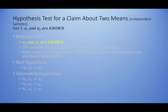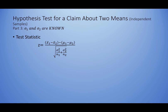Our third situation is when we actually know the values for our population standard deviations. This is very, very unlikely to occur, but if it does, the only thing that really changes is we now use a z-score instead of a t-statistic. The formula is very similar, but instead of plugging in sample variances or pooled variances, we plug in the population variances. The degrees of freedom would be the same as Situation 2: n₁ + n₂ − 2.